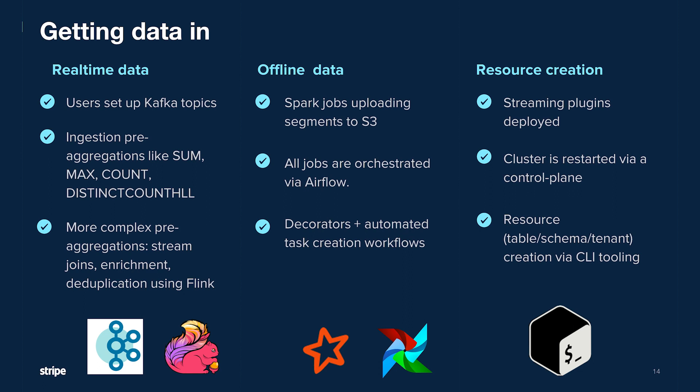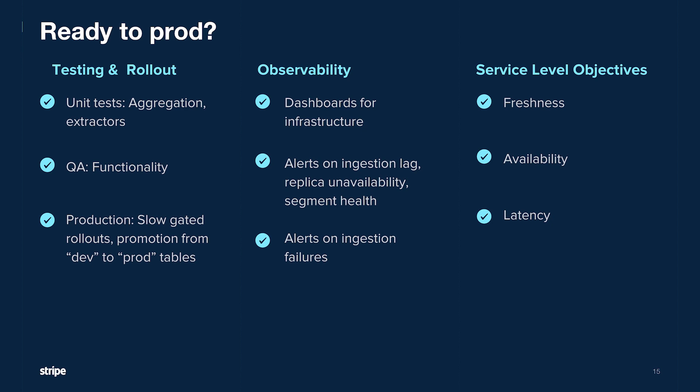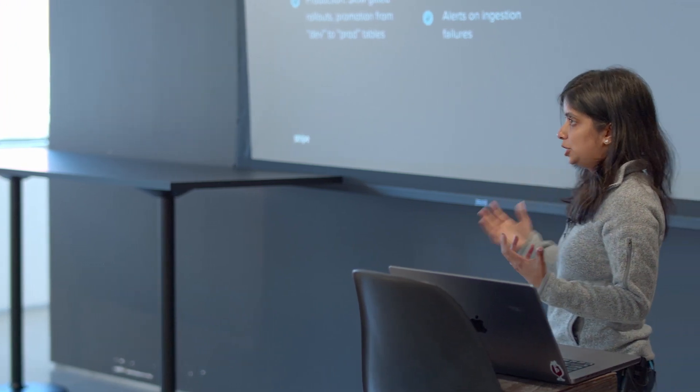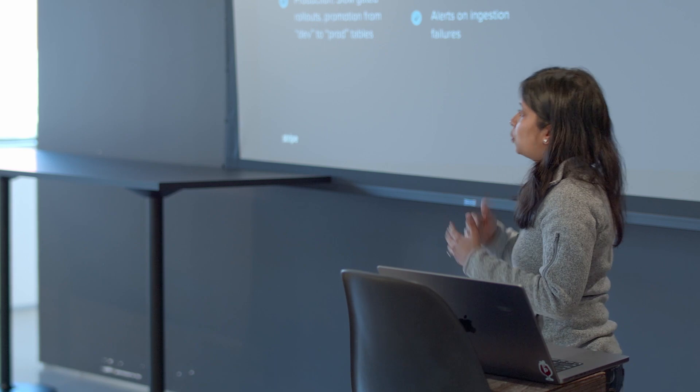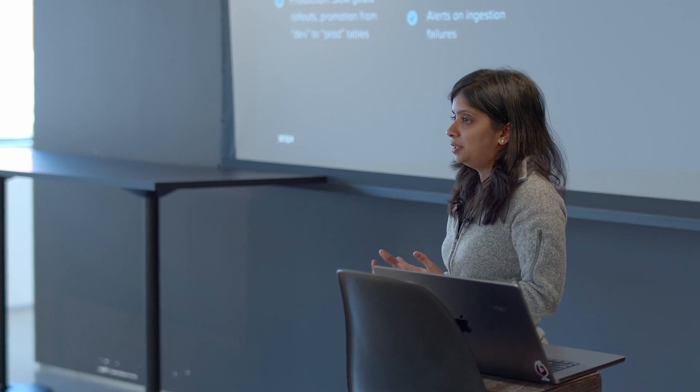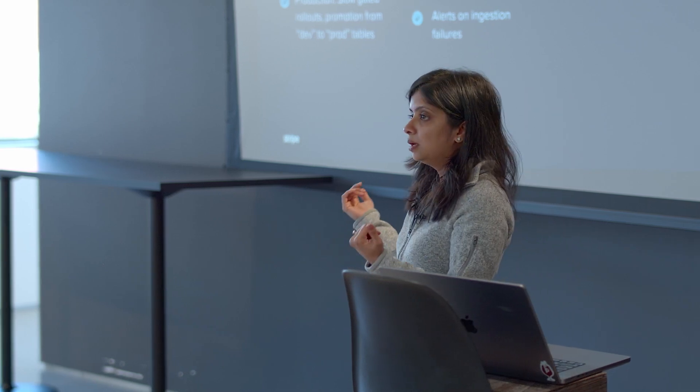At the end of all this, you have a table with data streaming in from both the real-time and offline sides. As a first step toward production, we move to a QA environment where users do functionality testing — changing the schema, experimenting with queries. Once they're satisfied, they roll out to production. We've done shadow rollouts where an old system and a new Pinot-backed system receive shadowed queries simultaneously, and we also do slow dial-ups from zero to 100% traffic. The reporting data platform team has a way to promote dev tables to production.